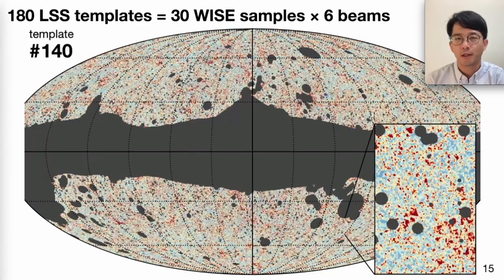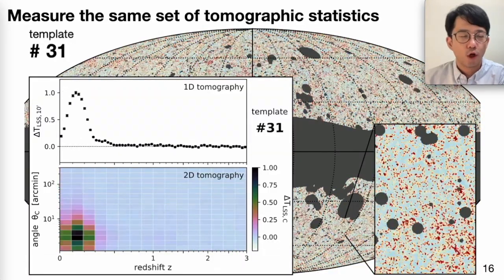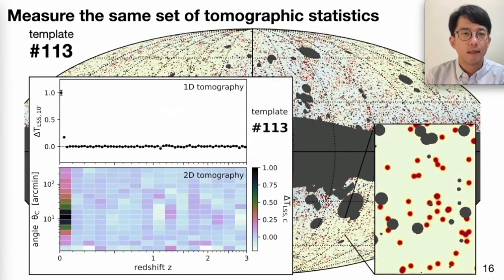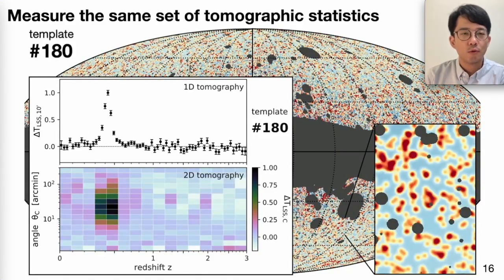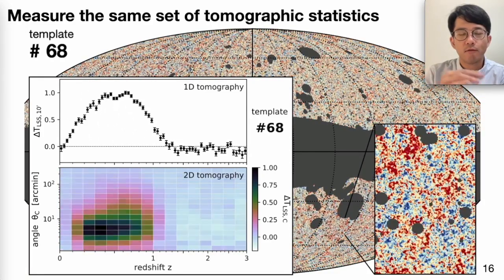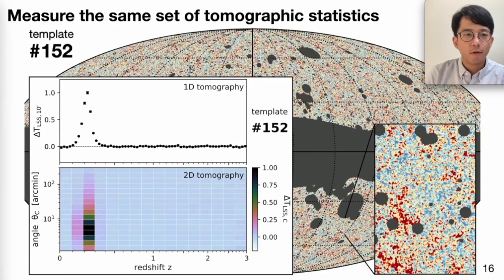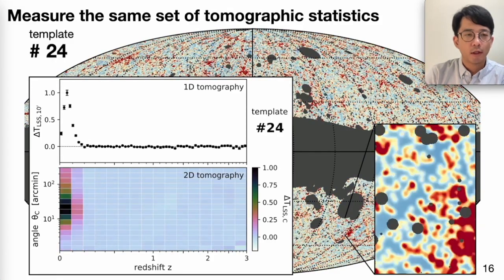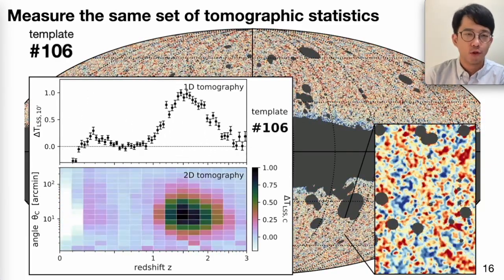There is another procedure to augment the beam size to have six different smoothing scales. This beam augmentation is necessary for the set of large-scale structure templates to be a complete basis set for the CIB, because the CIB might have different angular clustering compared to the WISE galaxies we use. Each template has a different redshift distribution — sometimes bimodal, sometimes a very broad peak. Within every group of six templates, the peak angular clustering scale moves from small to large scale, creating diversity in angular clustering that can reproduce the CIB properties.